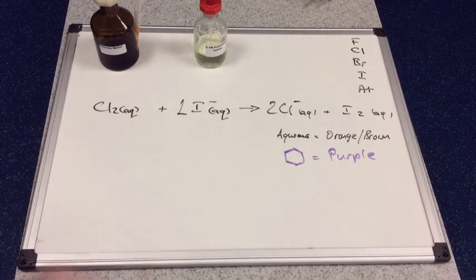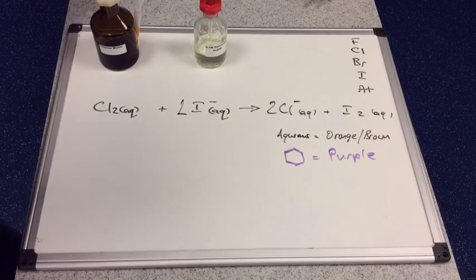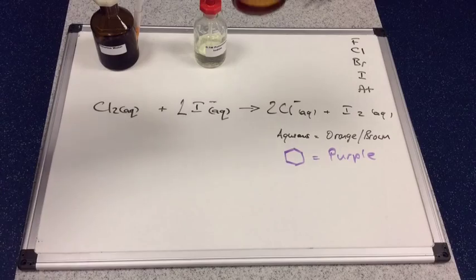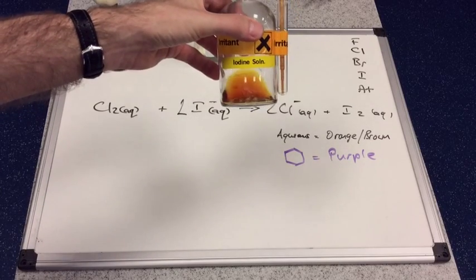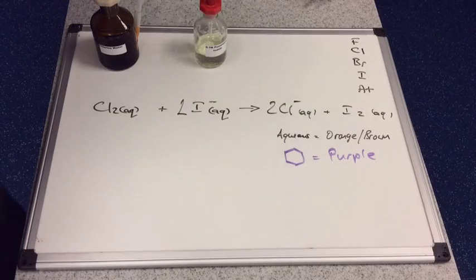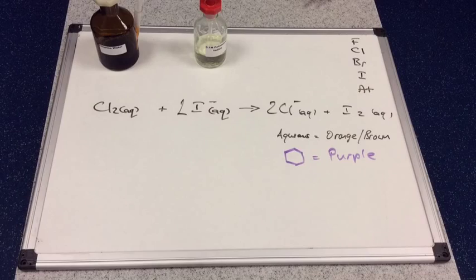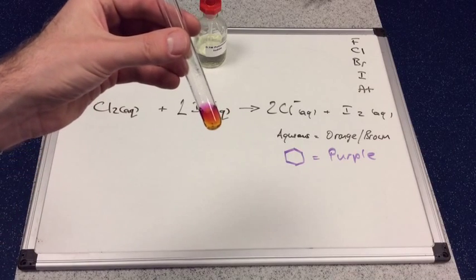So in aqueous conditions, iodine's a kind of orangey-brown color. If I just show you this bottle of iodine solution, you can see there's the color of iodine in solution. But in cyclohexane, it dissolves completely in cyclohexane and so we've got that nice purple color there.